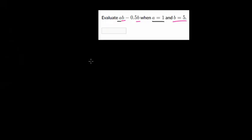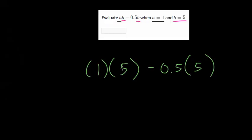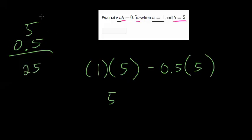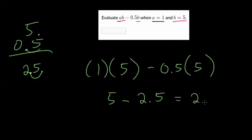Now we have an expression with a decimal. We replace A with 1 and B with 5, so we get A times B minus 0.5 times B, which becomes 1 times 5 minus 0.5 times 5. 1 times 5 is 5. For 0.5 times 5: when multiplying decimals, ignore the decimal — 5 times 5 is 25 — then count the decimal places. There was one decimal place, so we move the decimal once to get 2.5. Remember, 0.5 is the same as one half, so this is just half of 5, which is 2.5. And 5 minus 2.5 is 2.5.